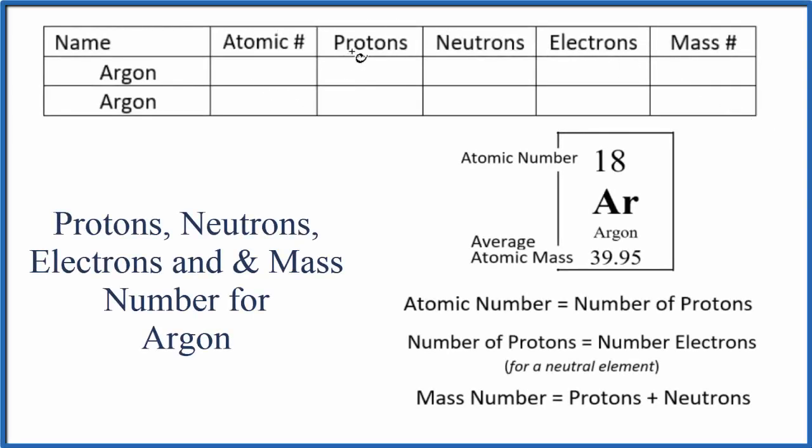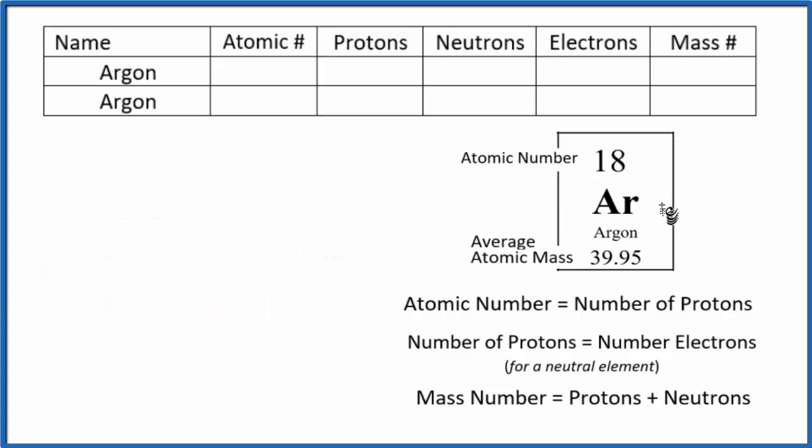In this video we'll find the number of protons, neutrons, electrons, and the mass number for argon. Argon has two main isotopes we'll look at. More on isotopes later, but when we look at the periodic table...